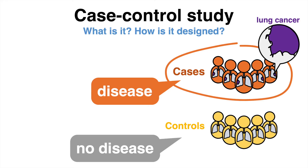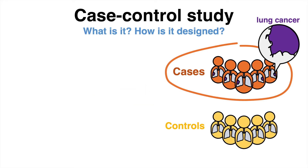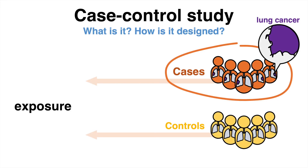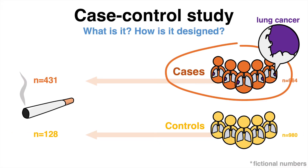Ideally, controls should be chosen to be as similar as possible to the cases. Secondly, in the case control study, researchers go back in time investigating exposures, which means that case control studies are inherently retrospective. The frequency of the predefined exposure is quantified in both groups and compared. For example, one could evaluate the quantity of people in both groups that were smoking years prior to the outcome.